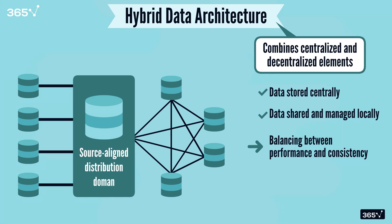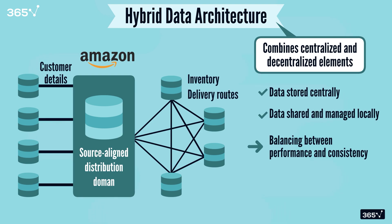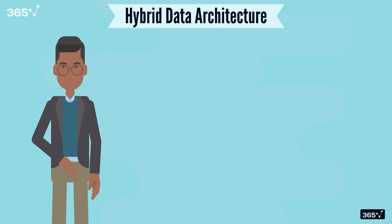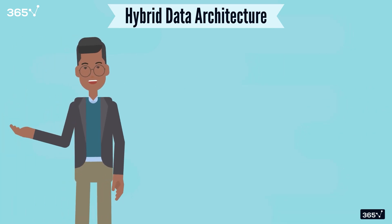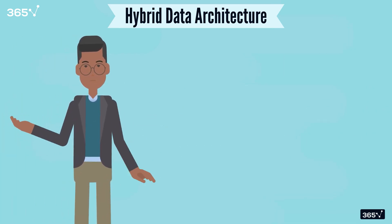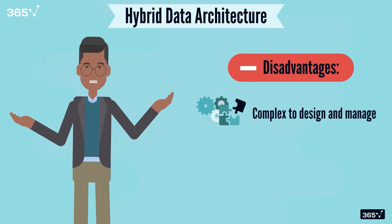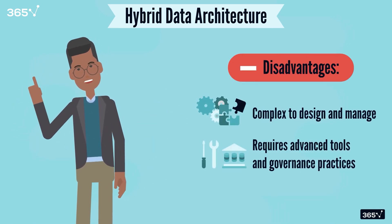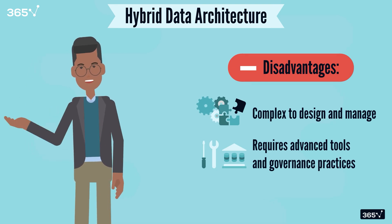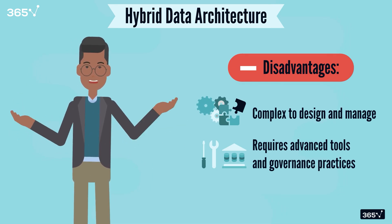Most modern-day organizations operate on a hybrid architecture. For example, Amazon stores critical data like customer details centrally, but also manages localized data like inventory and delivery routes regionally. Although the hybrid system is the best of both worlds, it's not a one-size-fits-all solution — it is much more complex to design and manage, requires advanced tools and governance practices, making it the costliest of the three options.